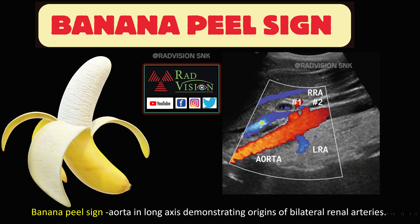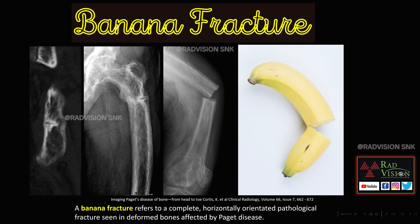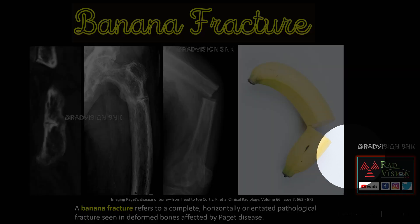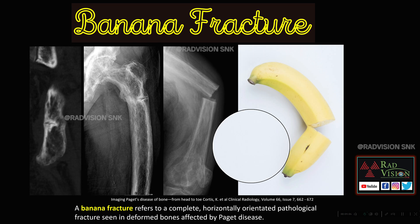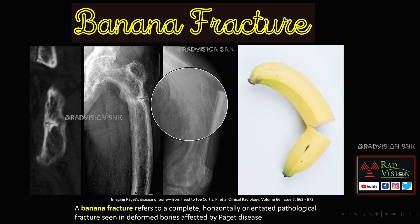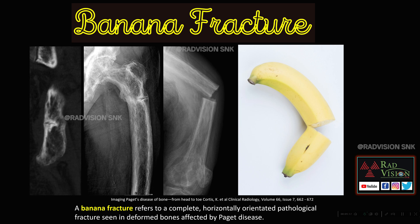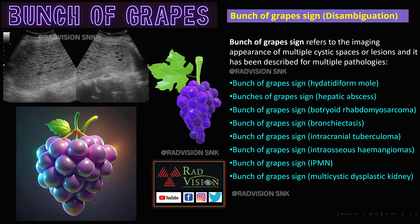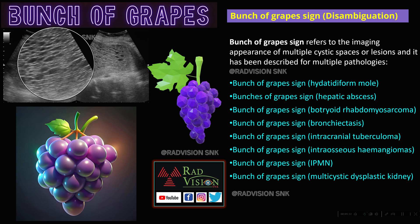These are banana fractures — complete, horizontally oriented pathological fractures typically seen in Paget's disease. You can clearly see these fractures, which completely resemble a broken banana. These fractures involve the deformed bones, typically in Paget's disease. Remember banana fracture in Paget's disease.